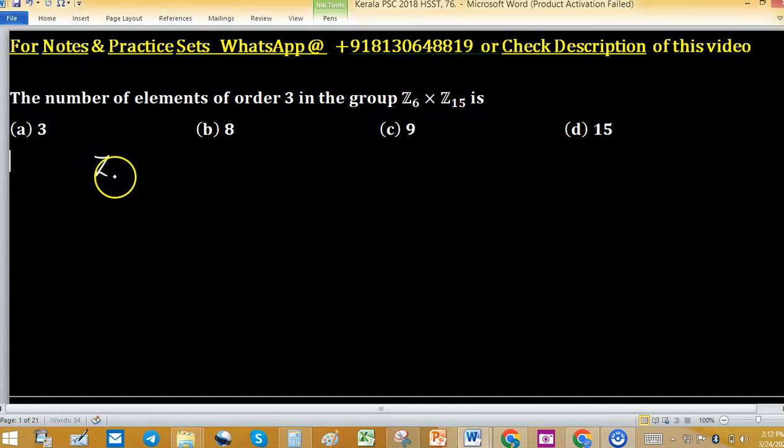We have to find order 3 elements in Z6 cross Z15. Any element which belongs to a direct product, how to find order of that element?